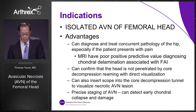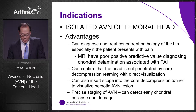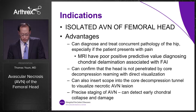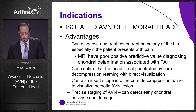The advantages of an arthroscopically assisted hip procedure is that you can diagnose and treat concurrent pathology of the hip, especially if the patients present with pain. MRIs have poor positive predictive value for diagnosing cartilage delamination associated with FAI. You can confirm that the head is not penetrated by core decompression reaming with direct visualization with the arthroscope. You can also insert the scope into the core decompression tunnel to visualize the necrotic AVN lesion, enabling precise staging of the avascular necrosis and detection of early chondral collapse.